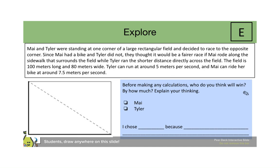To support students with disabilities, you can give them a checkbox of which student they think will win, and also a sentence frame: 'I chose blank because blank.' At this point, it's not important that students get the correct answer because it is a guess based on the information given. Students may say Mai is going faster but also has a longer distance to travel, so she might be fast enough to beat Tyler even going a little farther. Likewise, students might say Tyler might win because he has a shorter distance.